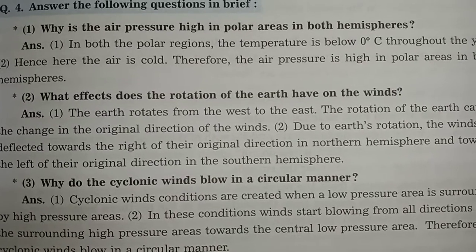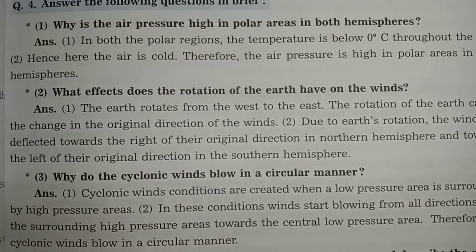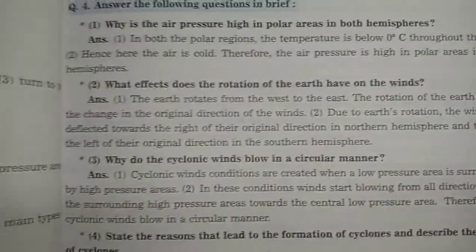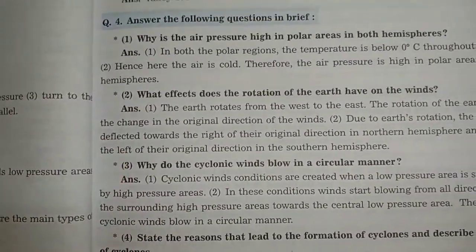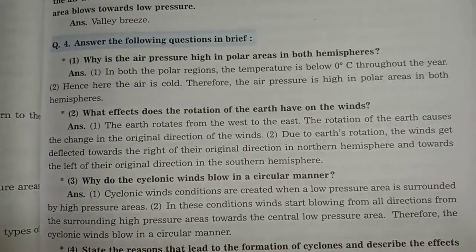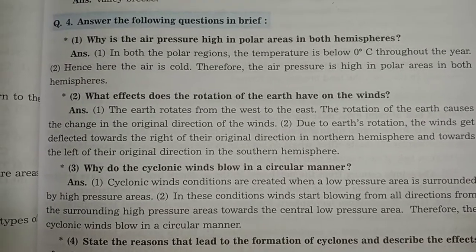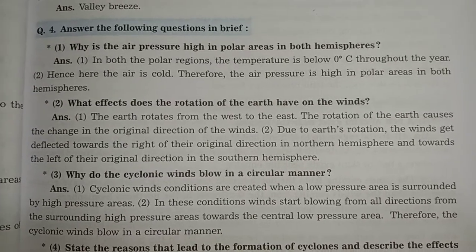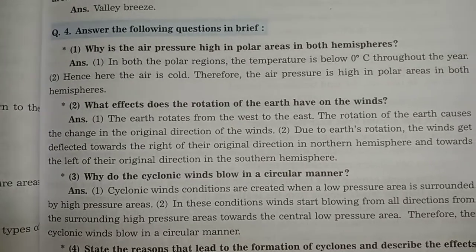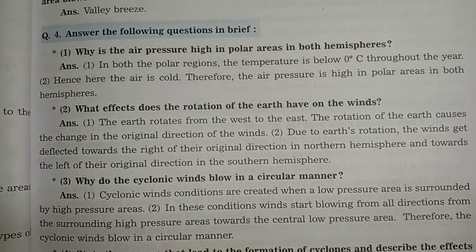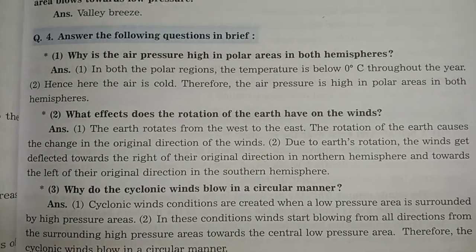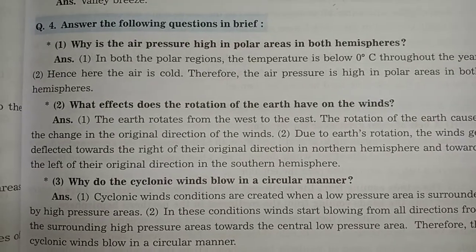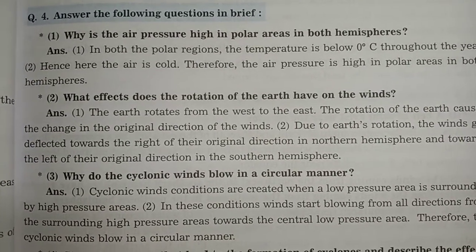What effect does the rotation of the earth have on wind? The earth rotates from west to east. The rotation causes changes in the original direction of the wind. Due to earth's rotation, wind gets deflected toward the right of its original direction in the northern hemisphere, and toward the left in the southern hemisphere.